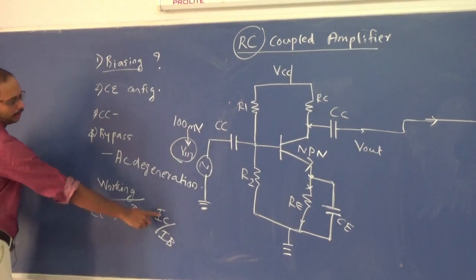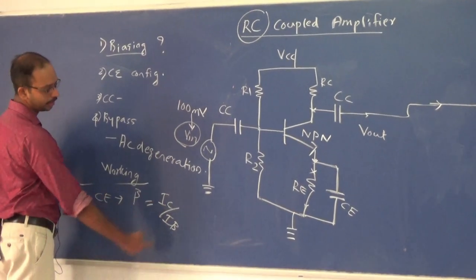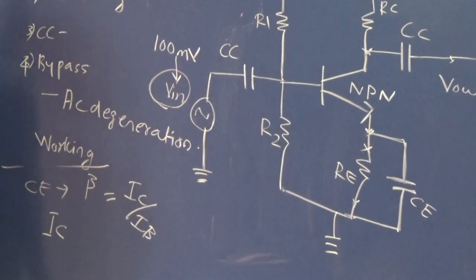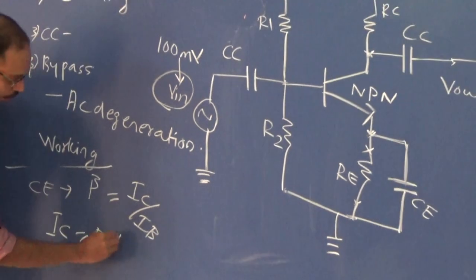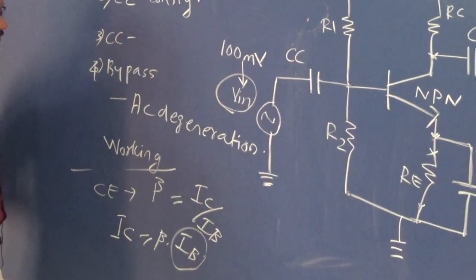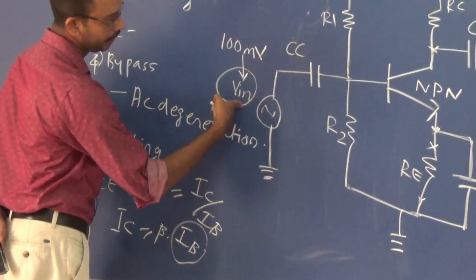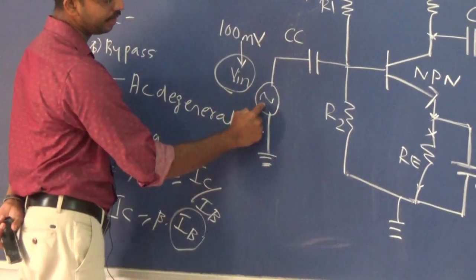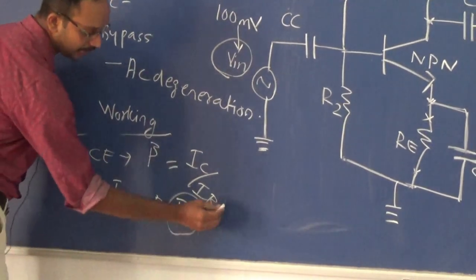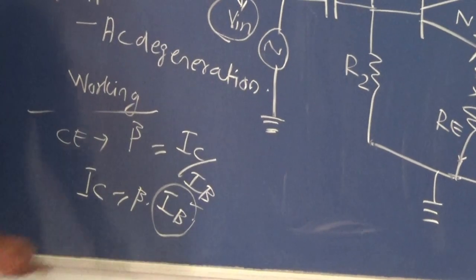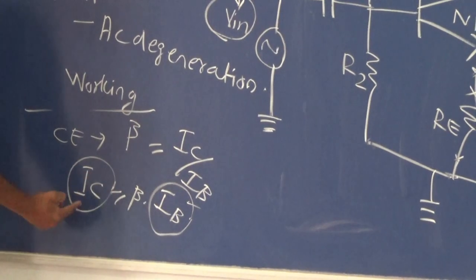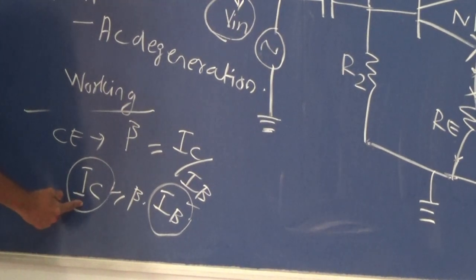From the gain equation, the output current IC equals beta times the input current IB. When a small signal is applied at the base, it generates the base current IB, which is multiplied by the gain factor beta to give IC. So IC is the output current and it represents the amplified signal.